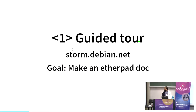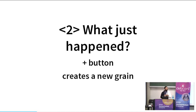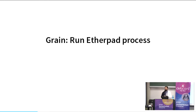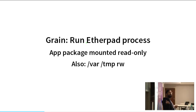When I click that plus button, Sandstorm creates a new grain of the app. Everything you create in Sandstorm — a document, an email box, or a chat system — is a grain. When I click that plus button, on the server it launched a new process for Etherpad. Etherpad is written in Node.js, so there's now a new Node.js process running server-side. That process runs in a context where it can only see the code in the Sandstorm package for Etherpad, which is mounted read-only.